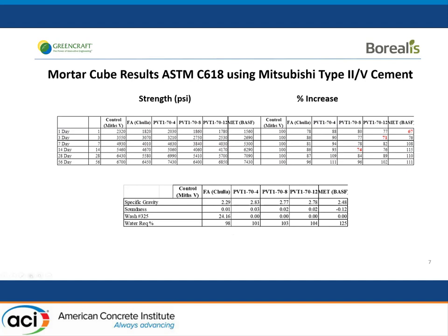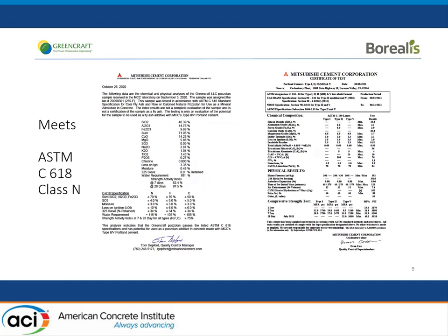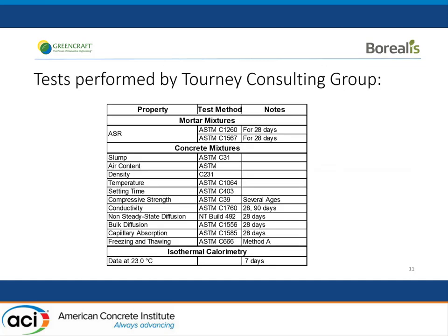As you can see, it has in some ways better strength activity index than fly ash available in that market. This is ASTM C618 certification data. I'm going to fast forward through this so I can turn it over to Neil, and he can present a more in-depth research analysis.